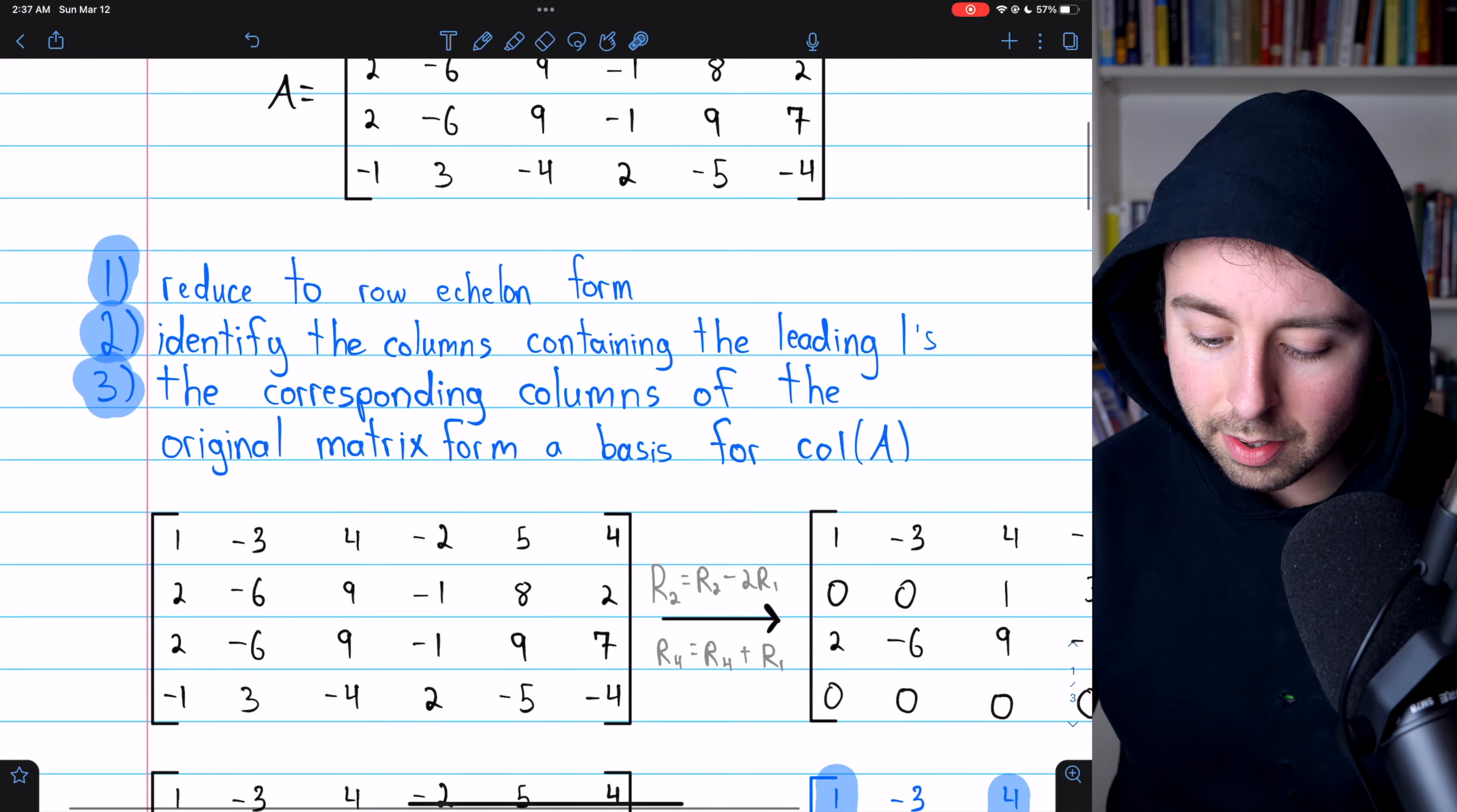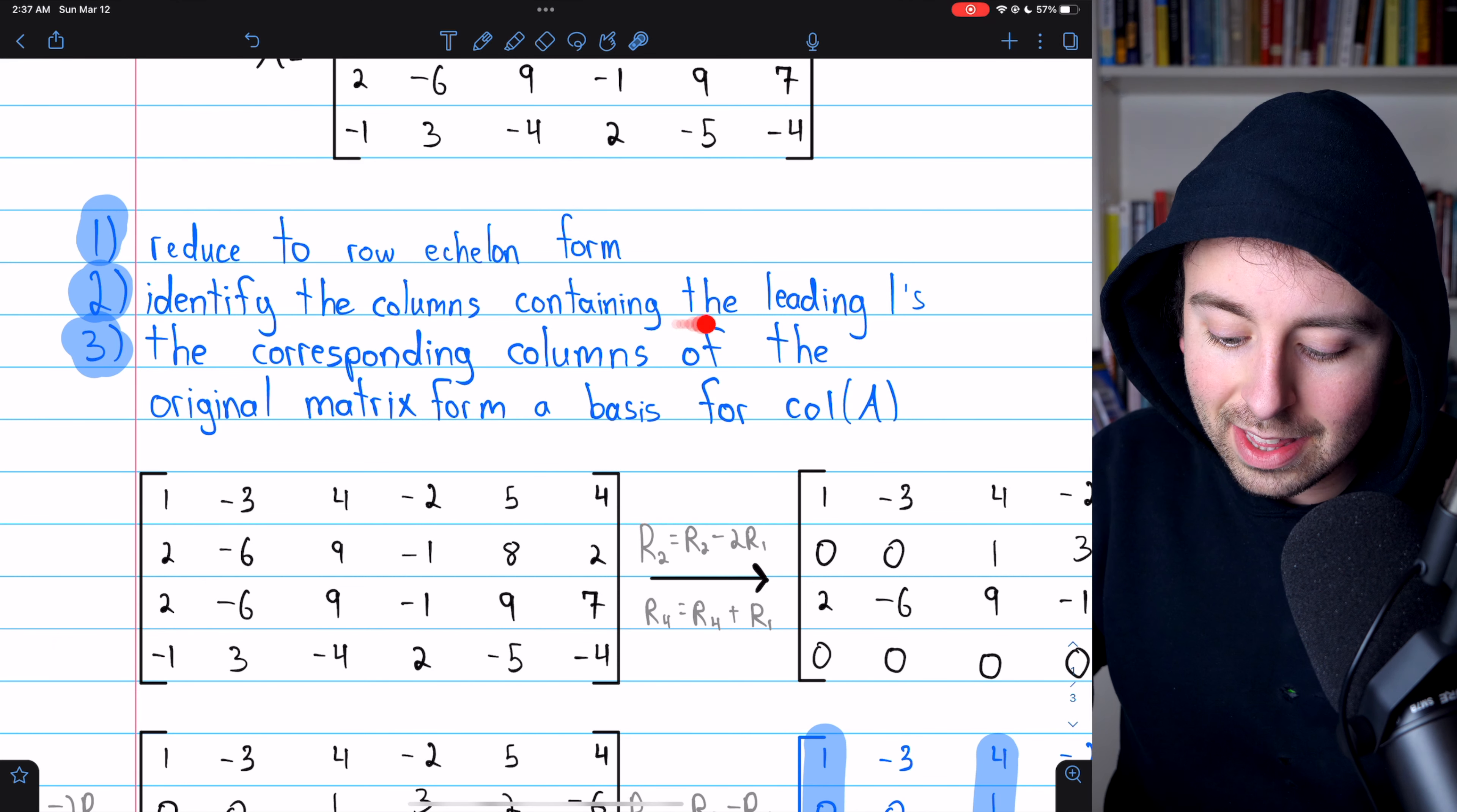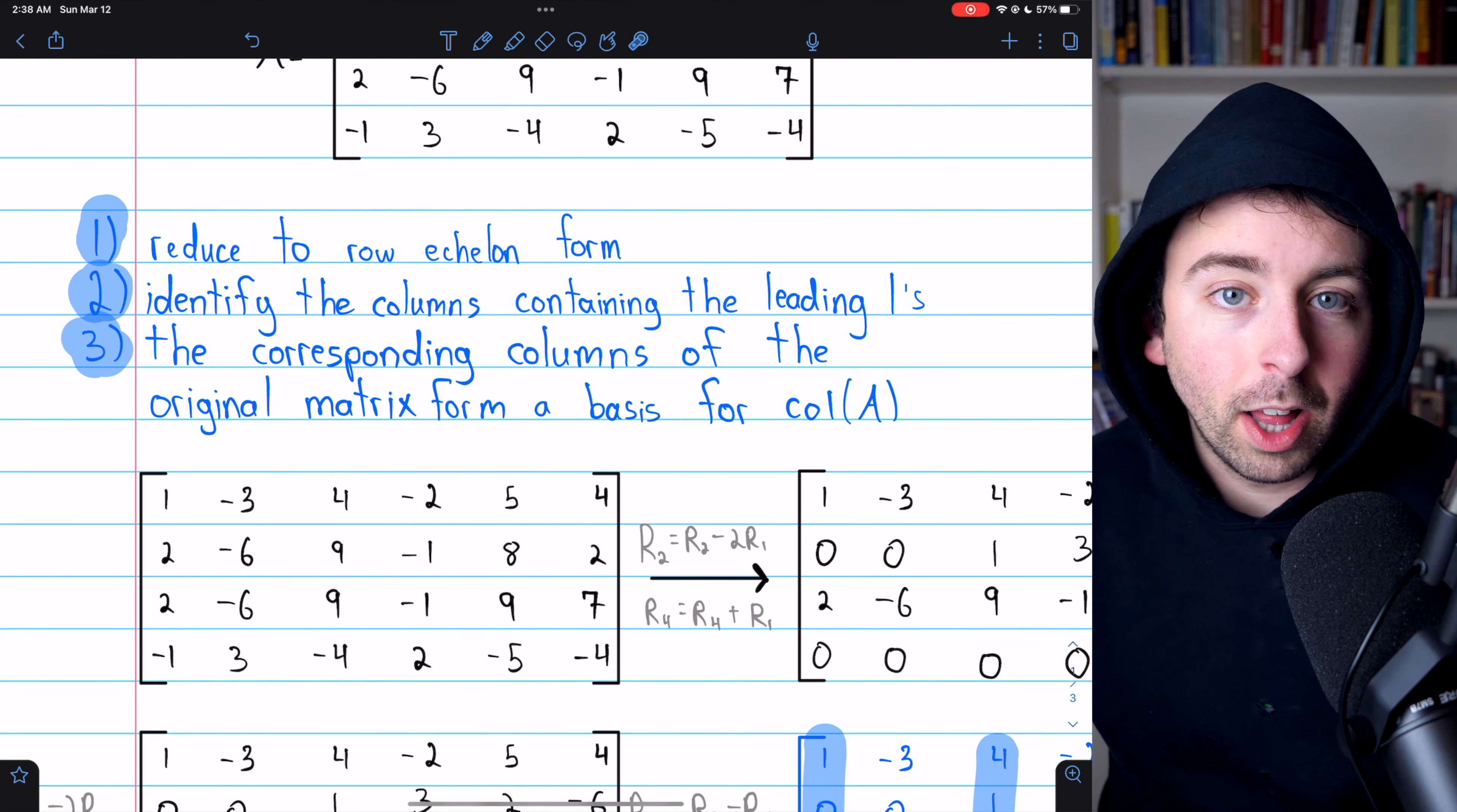So hopefully that was helpful. Once more, the steps are pretty simple. To find a basis for the column space of a matrix, reduce the matrix to echelon form, identify the columns in the echelon form that contain the leading ones, then the corresponding columns of the original matrix will form a basis for the column space.